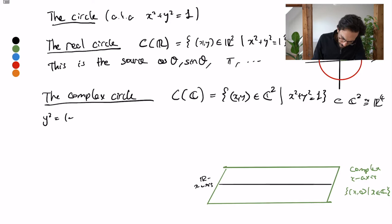So here's what we're going to do instead. y squared equals 1 minus x squared. Now informally one could say this means y is plus or minus the square root of 1 minus x squared.